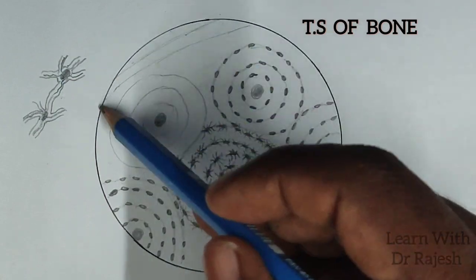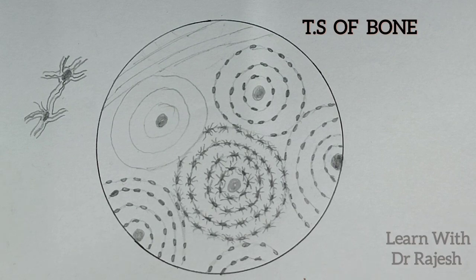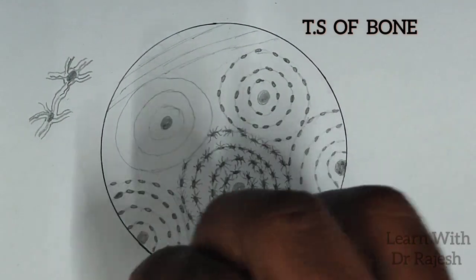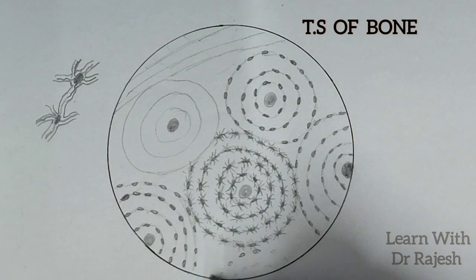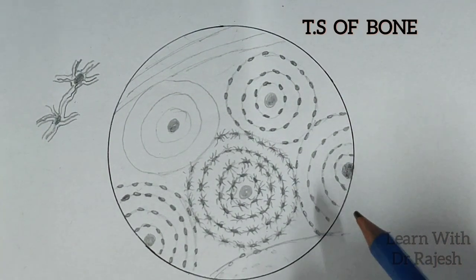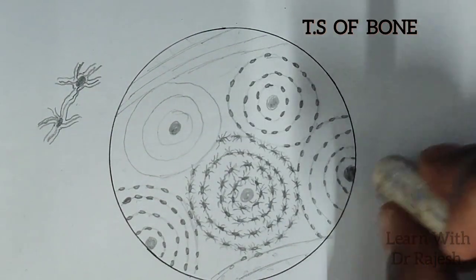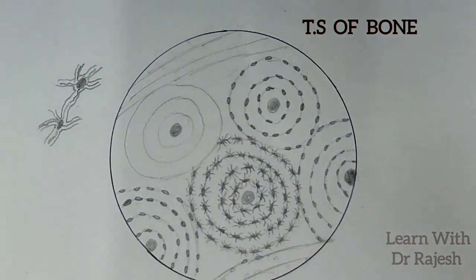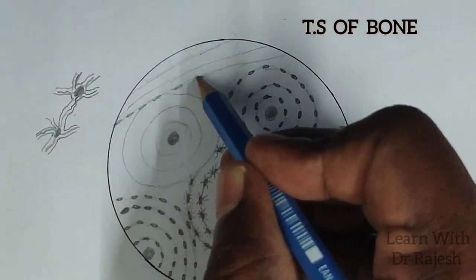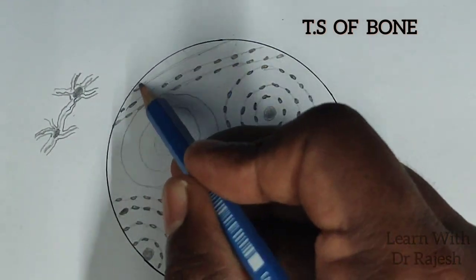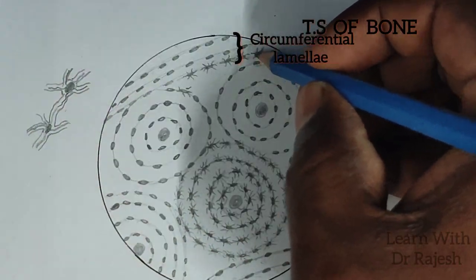What we are drawing now is the circumferential lamellae — this is the outer circumferential lamellae. In the same way, we draw the inner circumferential lamellae. Between these two lamellae is where the osteons are drawn. Care should be taken that both the inner and outer circumferential lamellae are parallel to each other and take the same curvature. We can fill in the osteocytes between these lamellae.